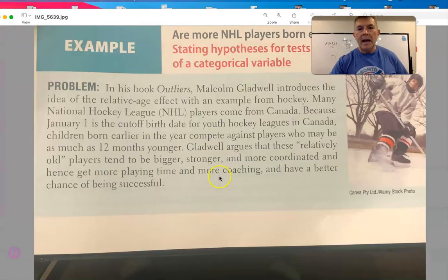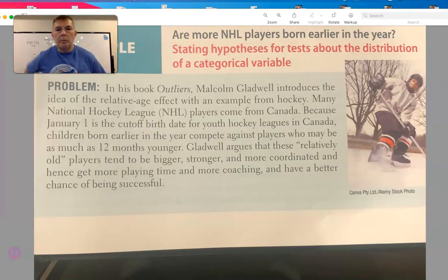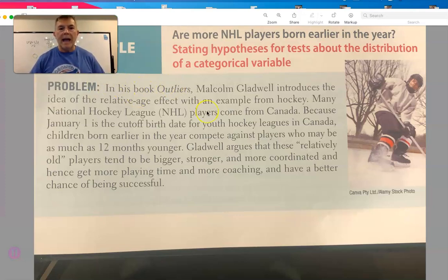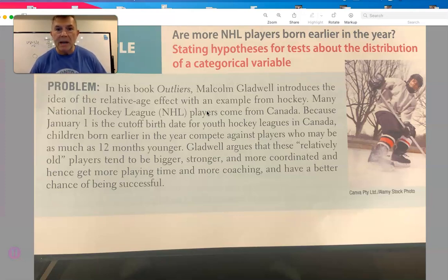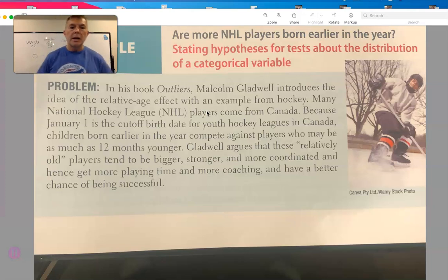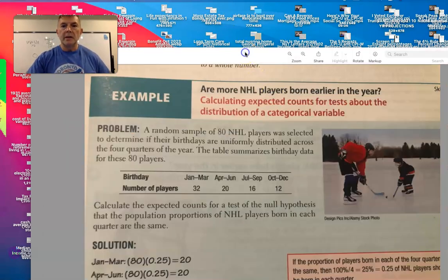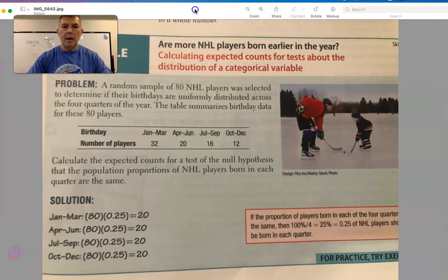The hypothesis is that NHL players born earlier in the year will make it to the NHL more than hockey players born later in the year. In his book Outliers, Malcolm Gladwell introduces the idea of relative age effect with the example from hockey. Many NHL players come from Canada, and because January 1st is the cutoff birthday for youth hockey leagues in Canada, children born earlier in the year compete against players who may be as much as 12 months younger. Gladwell argues those relatively older players tend to be bigger, stronger, faster, and hence get more playing time, more coaching, and a better chance of going to the NHL.